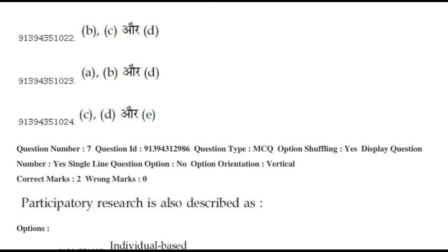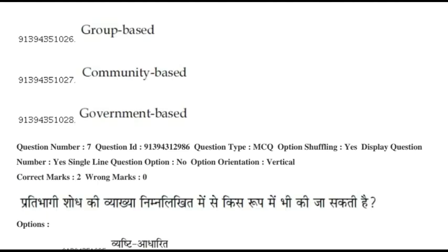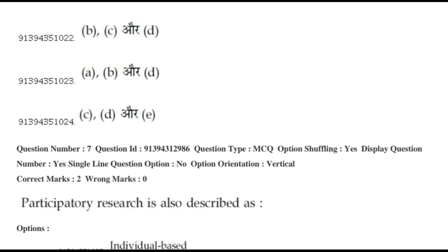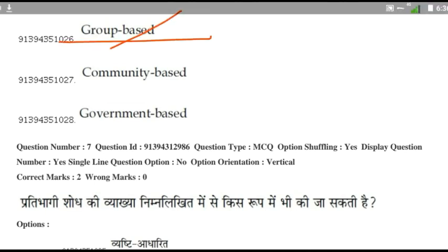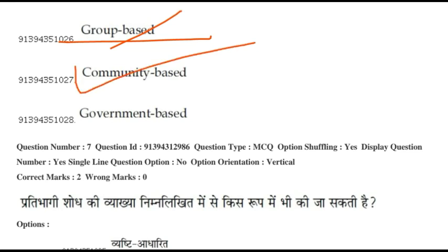Question six asks how participatory research is described. The options are individual-based, group-based, community-based, and government-based. Individual-based is not possible since participatory research cannot be individually based. Group-based is also not the right answer. The correct answer is community-based, because participatory research includes many people.